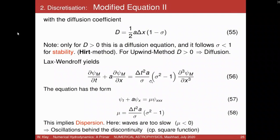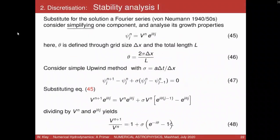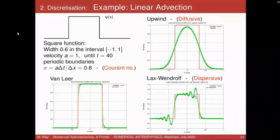The Lax-Wendroff method, if you plug into the modified equation approach, gives a more complicated equation with no diffusion visible but a third order term — dispersion. Waves, depending on their wave number or frequency, propagate with different speeds. In the Lax-Wendroff method they are propagated too slowly — that's why we had oscillations behind the front. In Beam-Warming they are too fast.